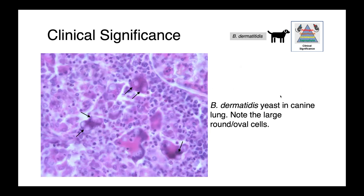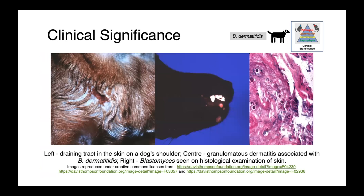In this image, you can see tissues from a canine lung with these large, round, oval yeast-like structures — very characteristic of Blastomyces dermatitidis. We can also frequently see draining tracts or cutaneous infections. On the left, a draining tract on a dog's shoulder caused by Blastomyces; in the center, granulomatous dermatitis with lesions on a dog's chin associated with a blasto infection; and on the right, histology of a canine skin lesion showing large budding yeast, with one clearly budding off.